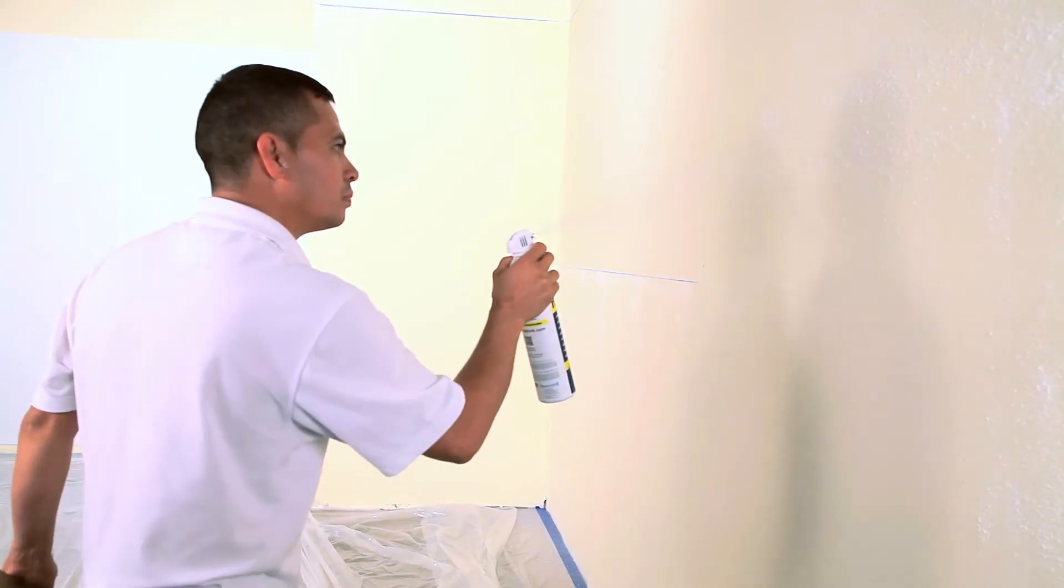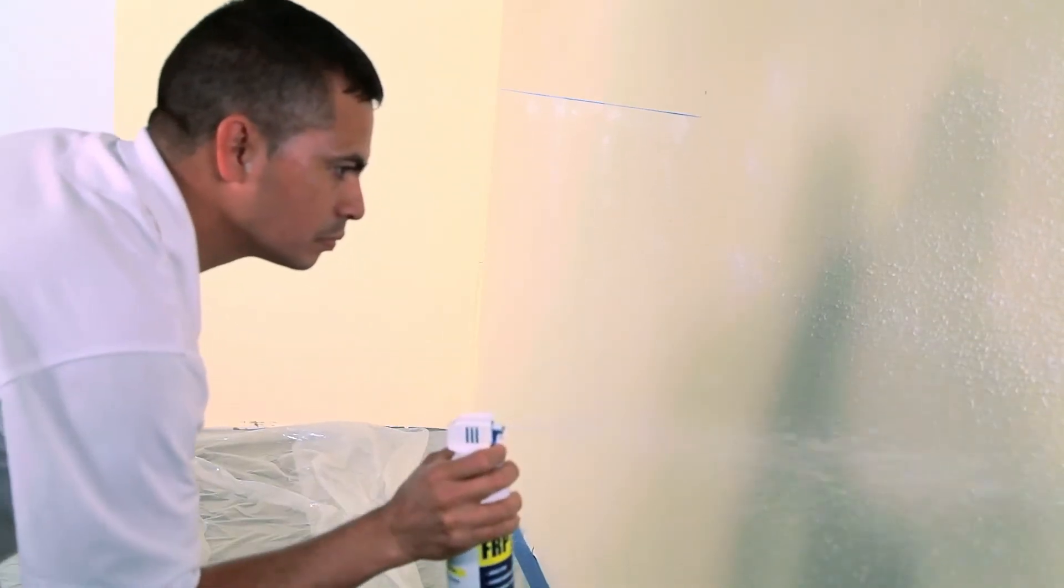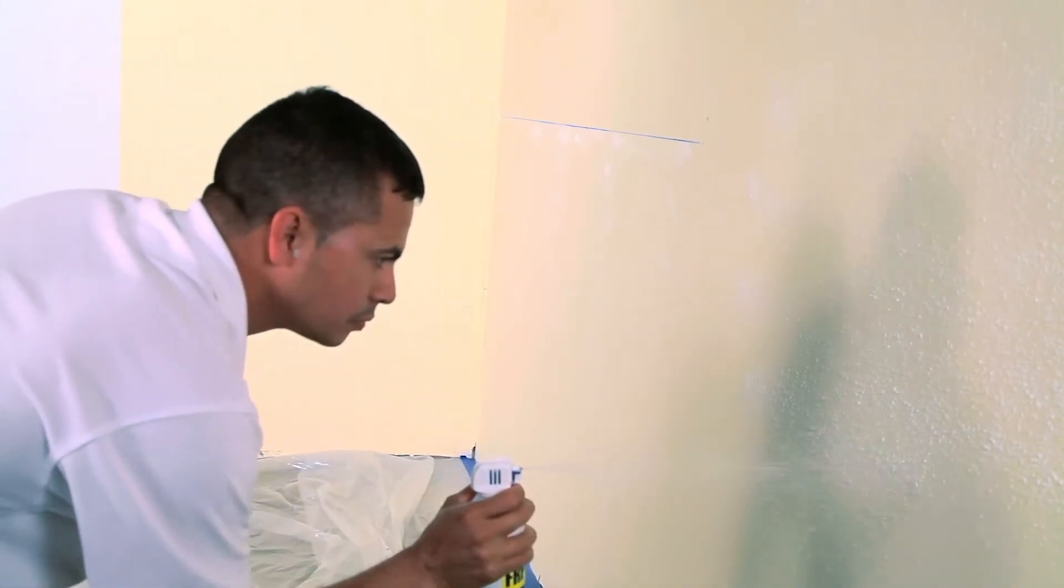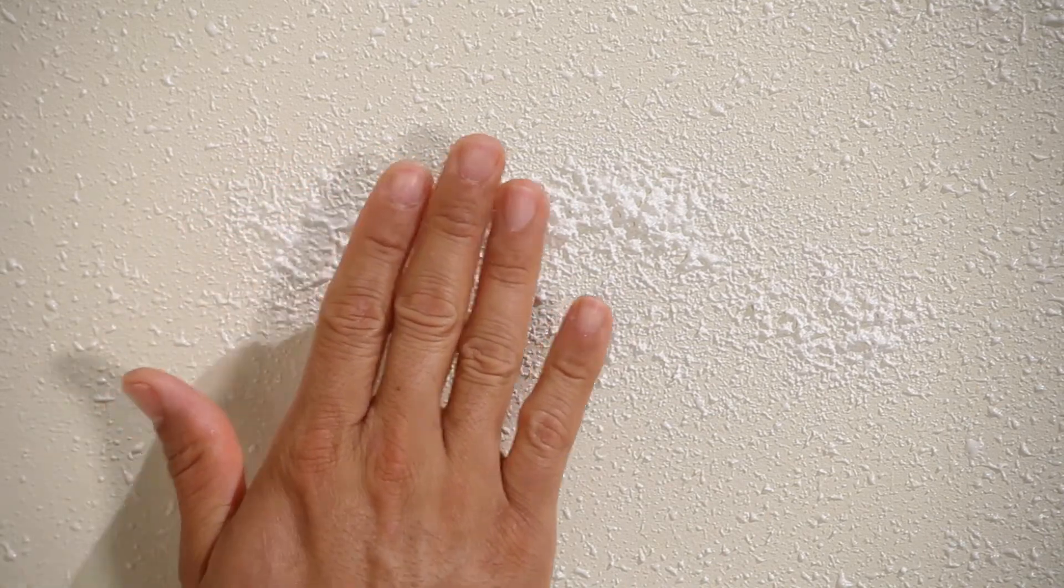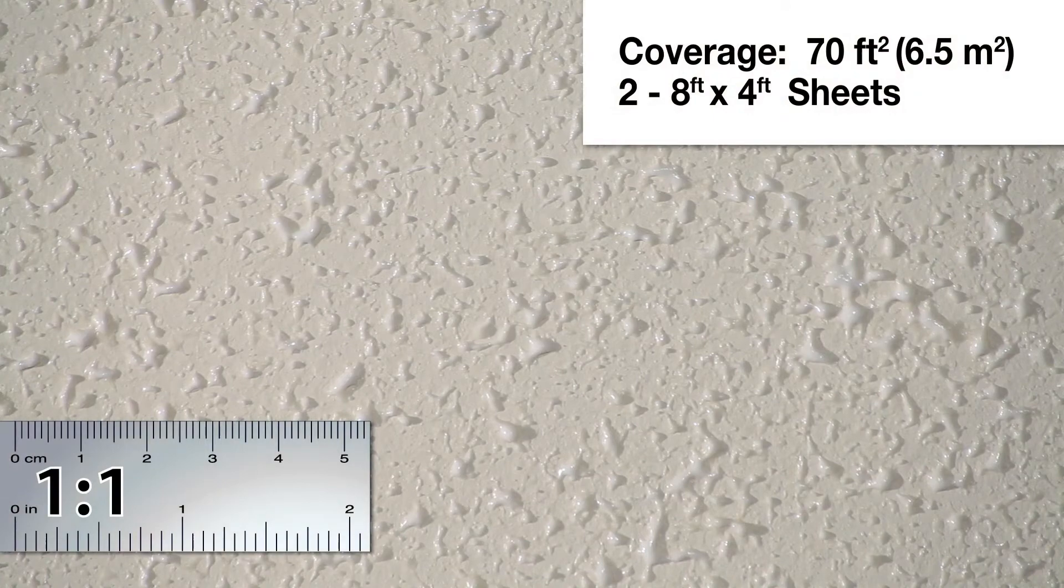Spraylock FRP Adhesive is delivered by a low-pressure propellant. Adhesive should spray out in a mist toward the desired surface. If excess spray occurs, pat adhesive down with your hand. Spray pattern should match this.